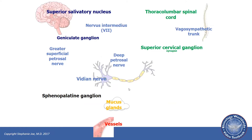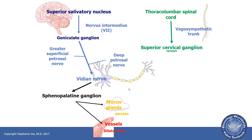This is illustrated in this drawing, in which the left side of the screen illustrates the parasympathetics and the right side of the screen shows the sympathetics, both joining in the deep petrosal nerve and making up the vidian nerve.